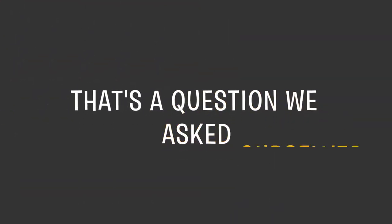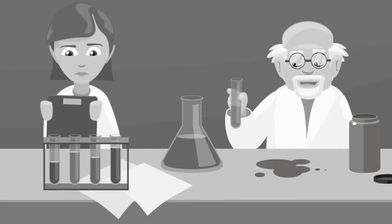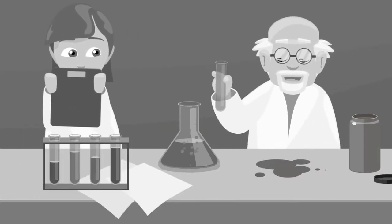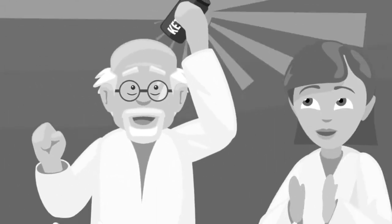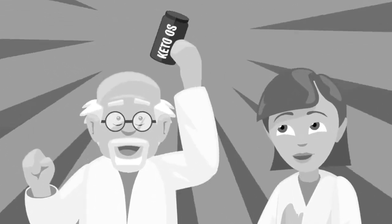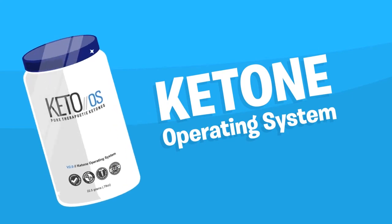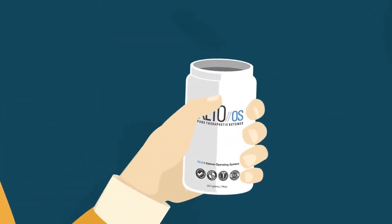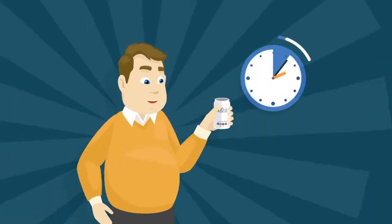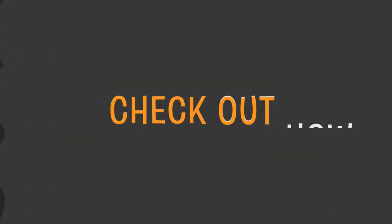Well, that's a question we asked ourselves a few years ago. And at first, it seemed like an impossible question. But recently, some scientists we work with have stumbled upon a new formula that actually made it possible. We call this new formula the ketone operating system or Keto OS for short. Within just 60 minutes of taking it, your body almost instantly goes into ketosis. Check out how this works.